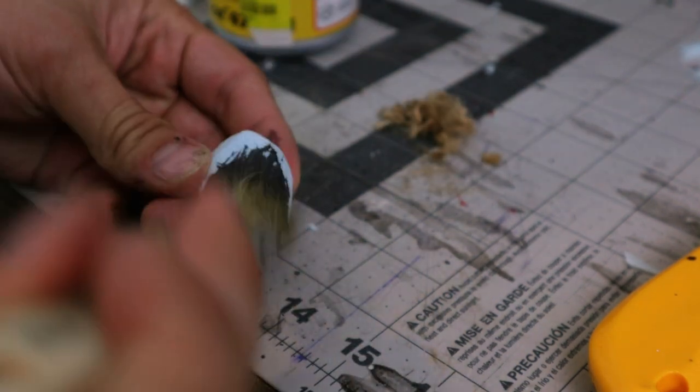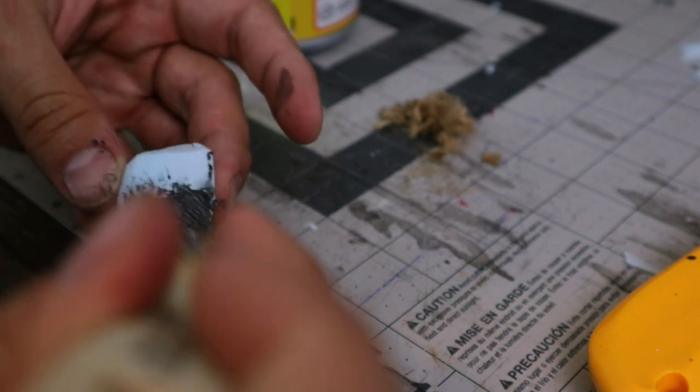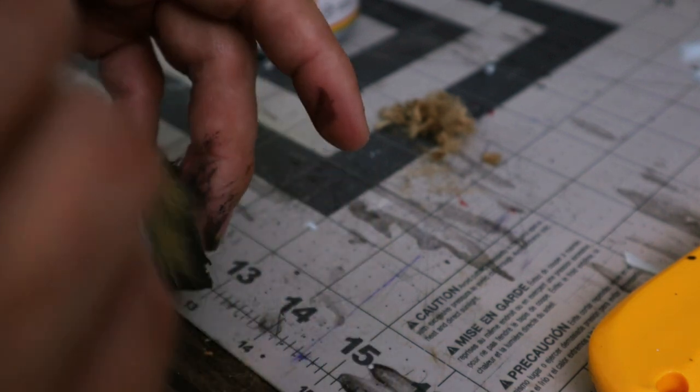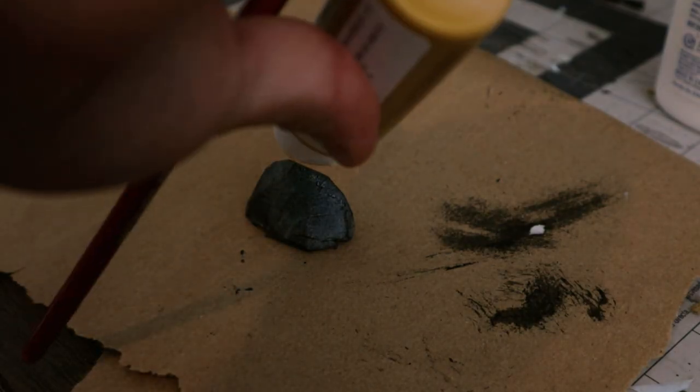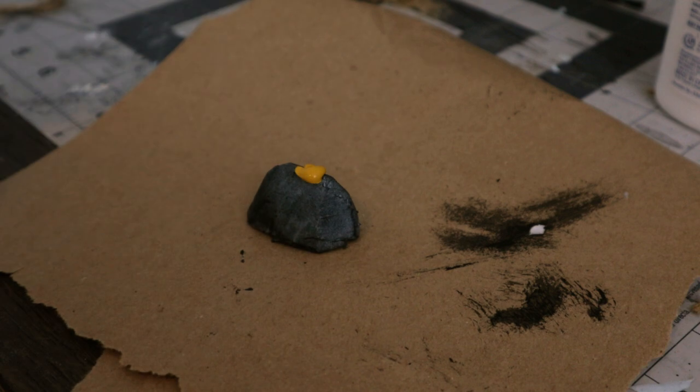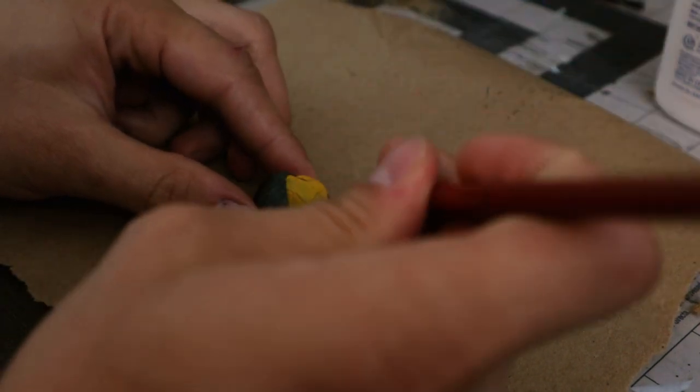Then I Mod Podged the piece I cut out for the hay bale. Once that dried, I painted on some yellow. If this was a little too bright, I probably should have went with a tan, but it's not really noticeable. I just didn't want any black showing through.